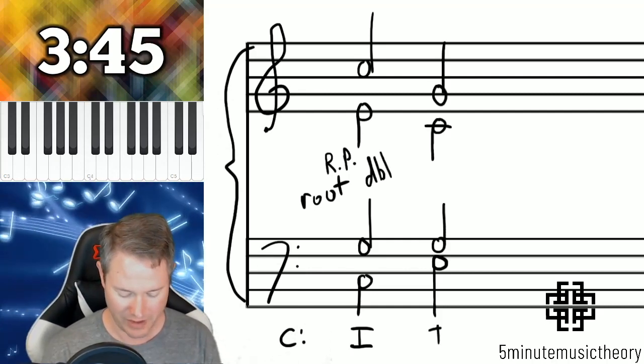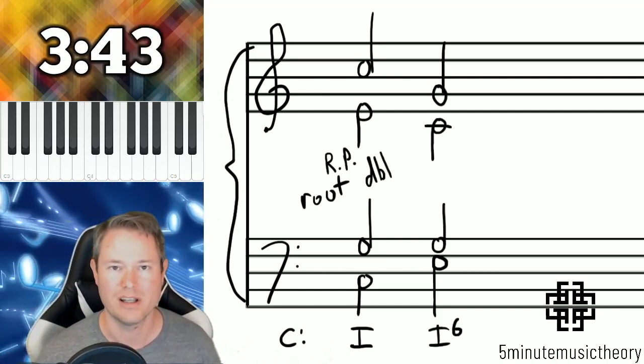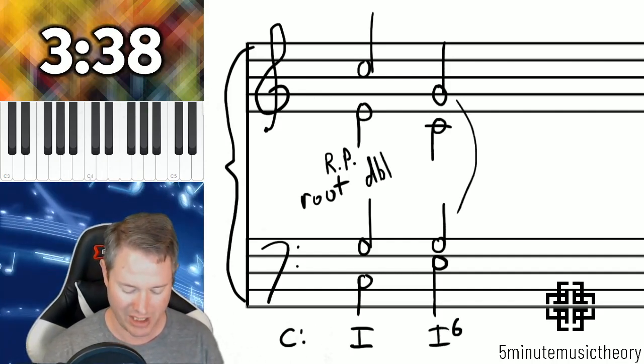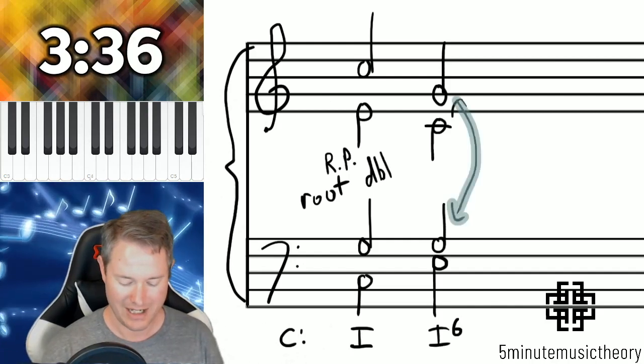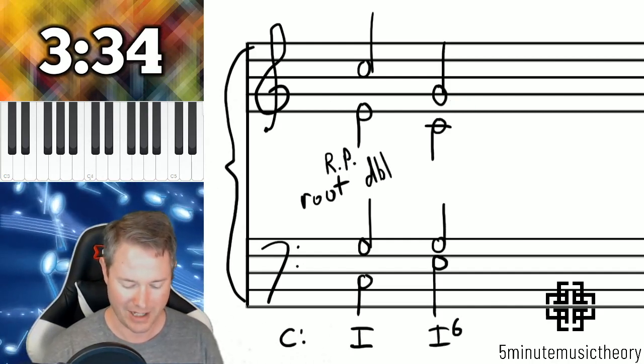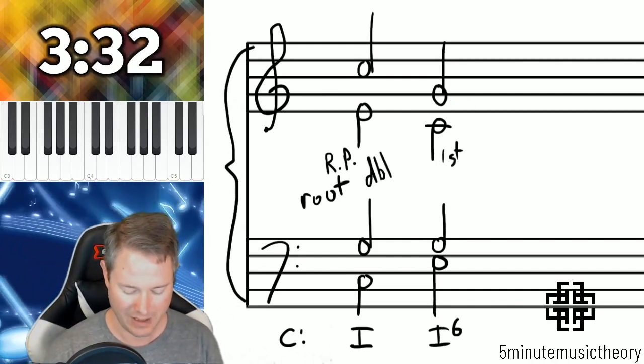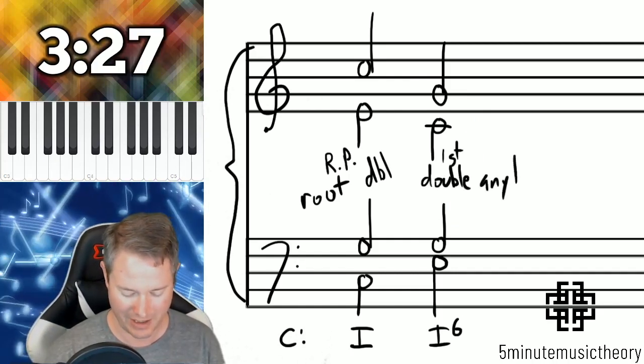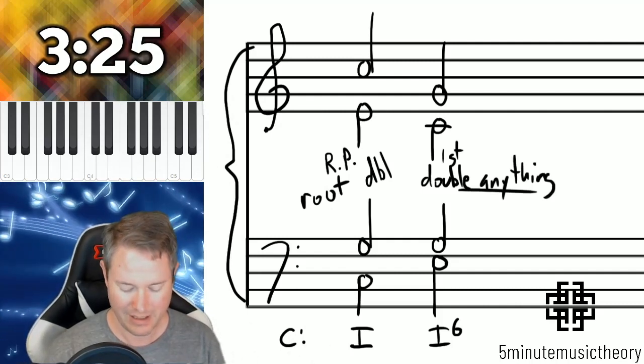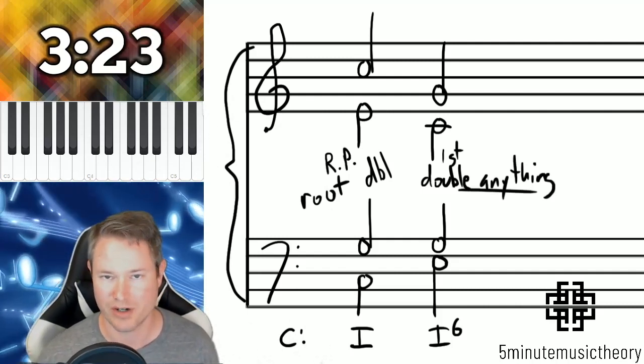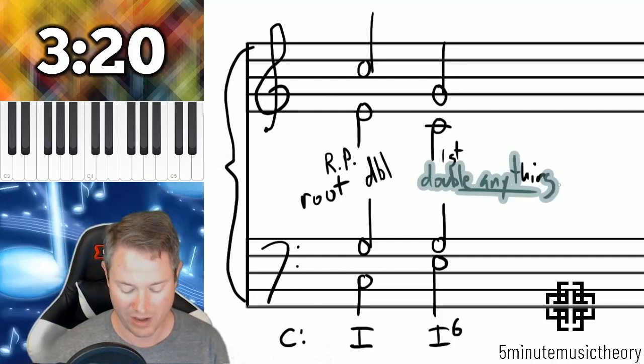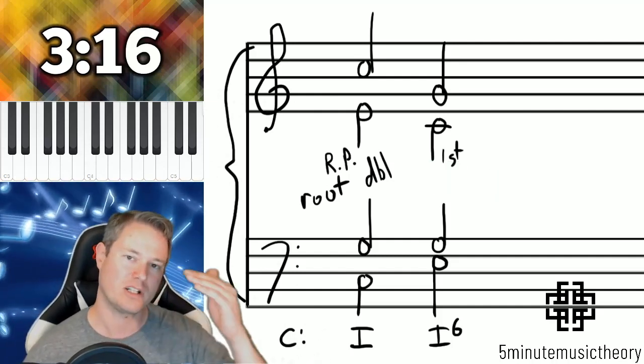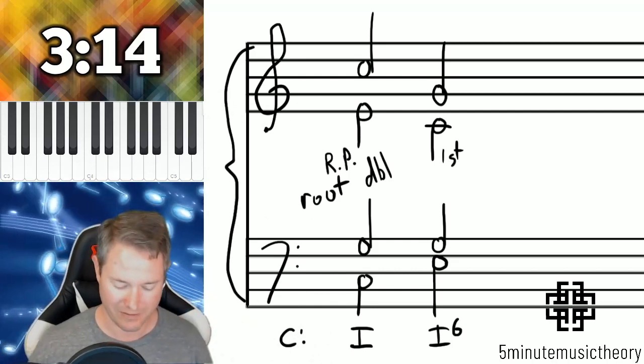For first inversion, so this is a tonic 6 chord, first inversion tonic chord in C major. Now notice what I doubled was the G. Here in a first inversion triad, you can double anything. So that means you can double the root, the third, the fifth, anything. What matters is where that doubled note happens. There's a hierarchy of strong to weak doublings for first inversion.